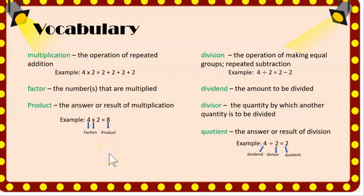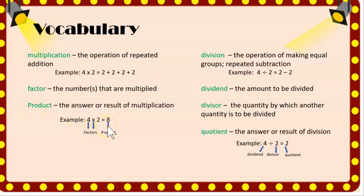Here are some key vocabulary words we will be using throughout today's lesson. Factors are the numbers that are being multiplied — as we can see, the four and two are factors. We also have the product, the answer or result of the multiplication problem. For division, we have the dividend, which is the amount being divided — the four. We have the divisor, the quantity by which another quantity is being divided — the two. And we have the quotient, the answer or result of the division problem.